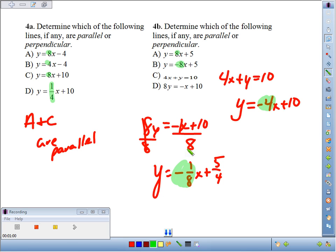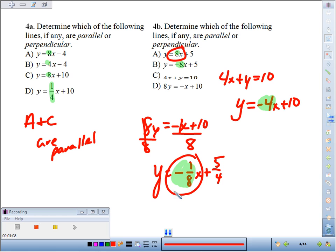Compare the slopes: 8, negative 8, negative 4, negative 1/8. None of them are the same, but 8 and negative 1/8, those are opposite reciprocals. So I'd say A and D are going to be perpendicular.